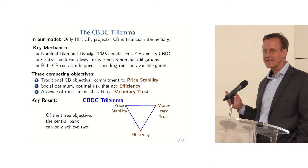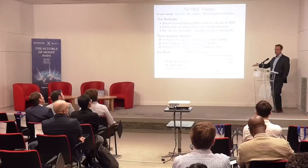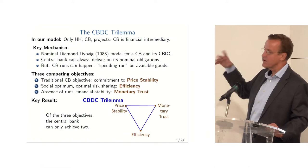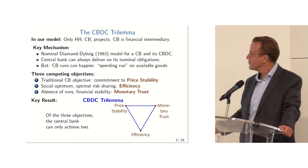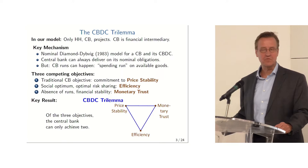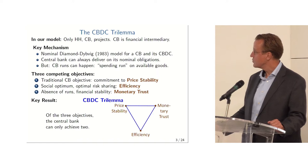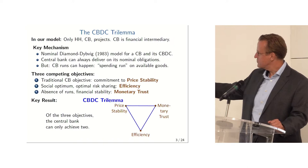So what does a run on the central bank mean? A run on the central bank is running away from cash, the same way that a deposit run is running away from deposits. In a standard bank run, people run away from deposits into something else — usually cash. Here, in the central bank, they run away from cash into what? The only thing that remains are goods. So it's a spending run. A run on goods is a run away from cash — that's how I want you to think about it. Now, central banks have three competing objectives: a traditional price stability objective, efficiency and risk-sharing, and ensuring there are no runs — we want trust that the monetary system holds.